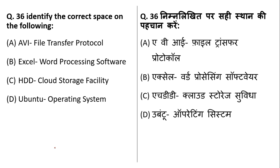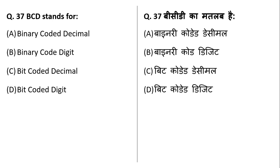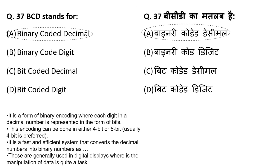Identify the correct match: AVI means Audio Video Interleave — it is an audio-video file format, not a file transfer protocol. Excel is not a word processing software — MS Word does that. HDD is not a cloud storage facility. Ubuntu is an operating system — yes, this is true. So D is the right answer. Other operating systems include Windows, Linux, and Unix. BCD in computing stands for Binary Coded Decimal, a binary encoding where each digit in a decimal number is represented in 4 or 8 bits.